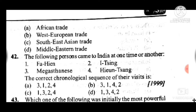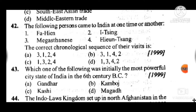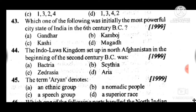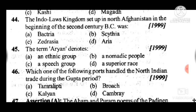Question 43: Which one of the following was initially the most powerful city-state of India in the 6th century BC? Answer is D, Magadha. Question 44: The Indo-Greek kingdom set up in north Afghanistan in the beginning of the 2nd century BC was — answer is A, Bactria. Question 45: The term 'Arghatta' denotes — answer is C, a type of waterwheel/group.